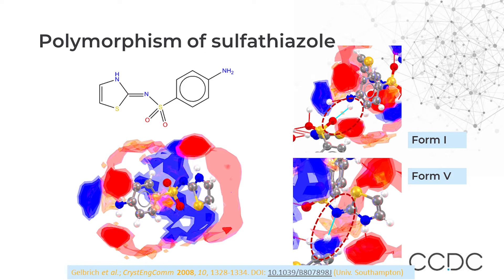For form number five, all strong interaction peaks are satisfied by relevant interactions. For form number one, it is noticeable that one of the interactions is well outside the interaction map peak, which is a sign of metastability. That matches what is known experimentally — the most thermodynamically stable form is believed to be form number five, while form one is the least stable.